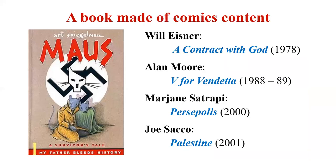Other graphic novels include Will Eisner's A Contract with God; Alan Moore's V for Vendetta (also a film); Marjane Satrapi's Persepolis, an autobiography in two parts (Part 1 in 2000); and Joe Sacco's Palestine. Most significantly, Art Spiegelman's Maus (S-P-I-E-G-E-L-M-A-N) revolutionized the graphic novel genre. It came in two parts — Part 1: My Father Bleeds History (A Survivor's Tale). It is about the Holocaust, with a unique approach: Jews are portrayed as mice and Nazis as cats — a cat-and-mouse survival story.